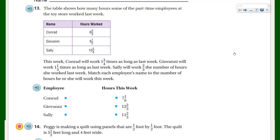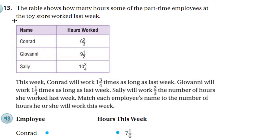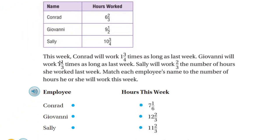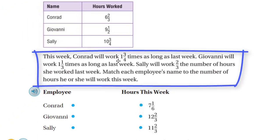We have question 13. The table shows how many hours some of the part-time employees at the toy store worked last week. Conrad worked six and two-thirds hours, Giovanni nine and a half, Sally ten and three-quarters. This week Conrad will work one and three-quarters times as long as last week, Giovanni will work one and one-third times as long, and Sally will work two-thirds the number of hours she worked last week. Match each employee's name to the number of hours he or she will work this week.